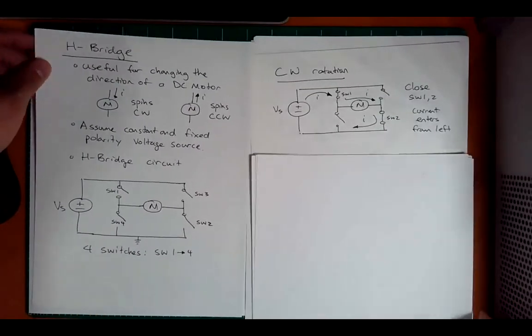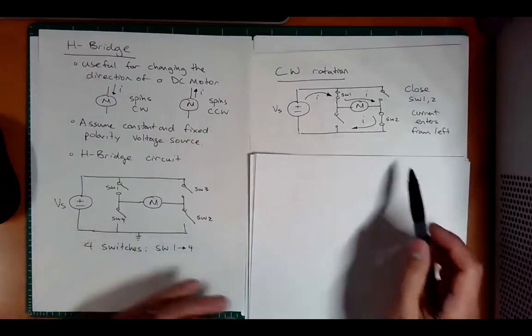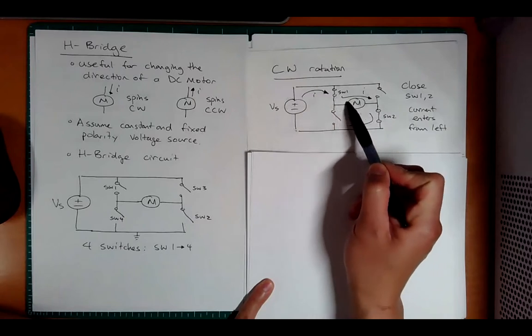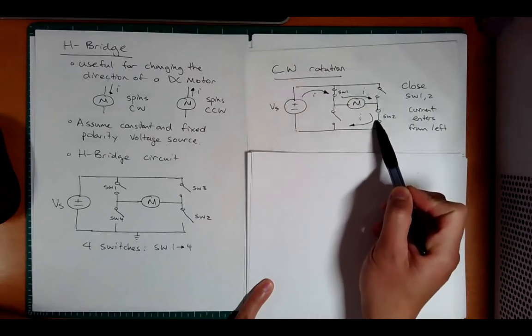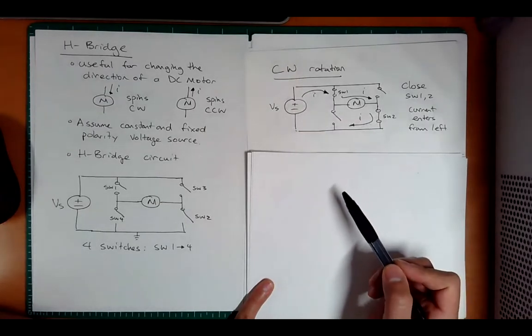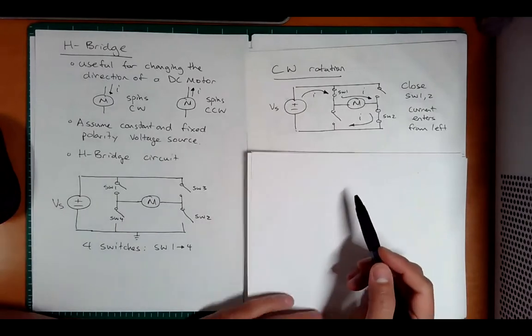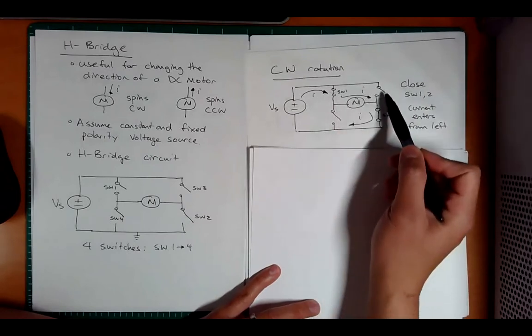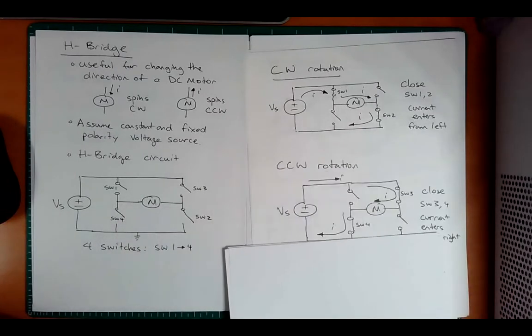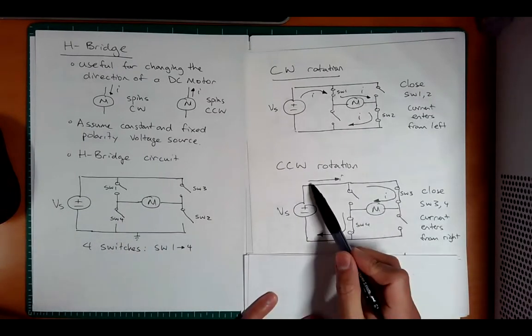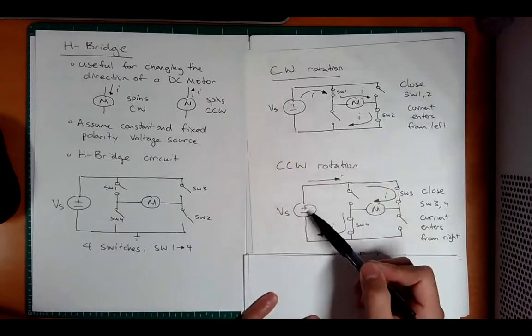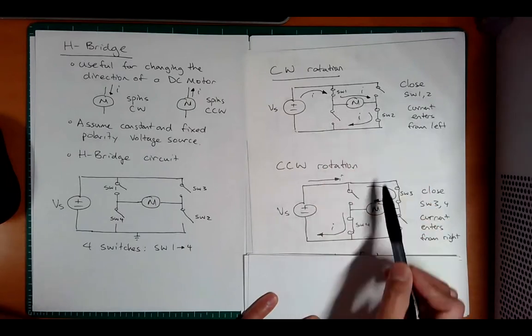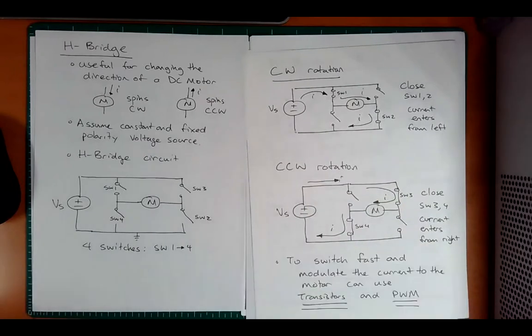Here's the H-bridge circuit. I think you can see that's an H here. Notice I have ground here, and I have high here. You have your voltage source, like your battery. There's four switches, one, two, three, four. We put our motor in the middle. If I were to close switches one and two, current flows from the voltage source down through switch one, through the motor from left to right, and goes down switch two.